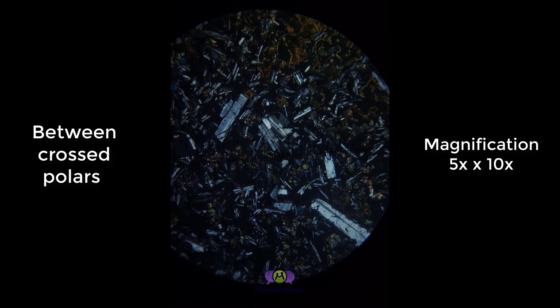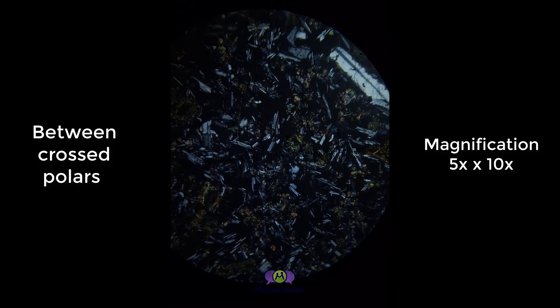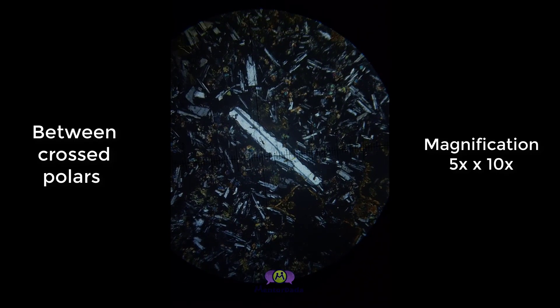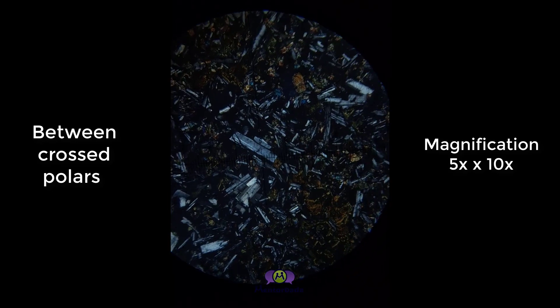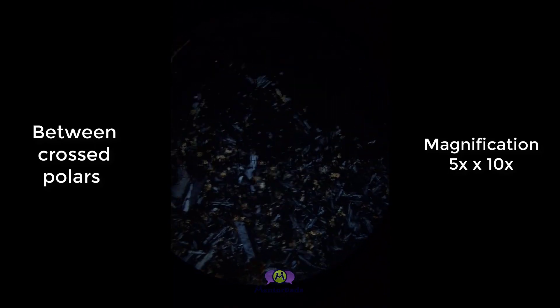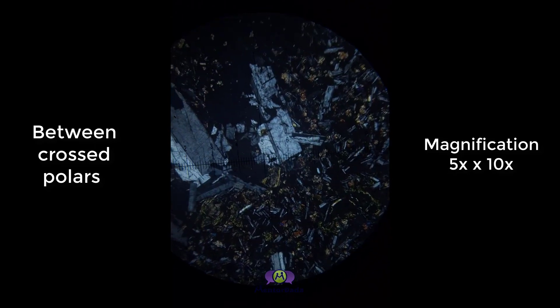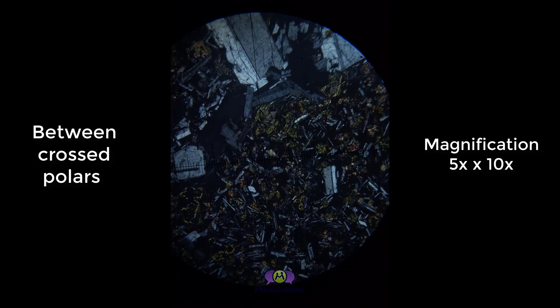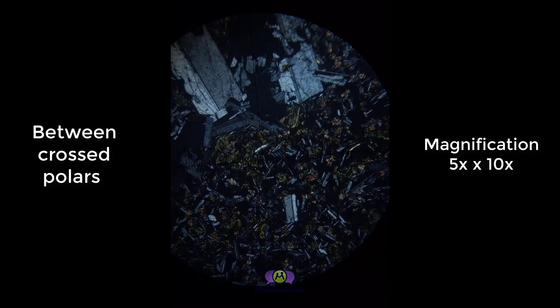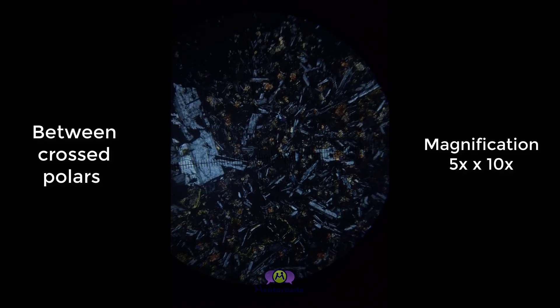Under XPL, you will observe that the plagioclase laths are showing lamellar twinning. Some of the plagioclase are coarse grain and some are fine grain. The yellow patches are mostly devitrified glassy materials and some of them are pyroxenes.